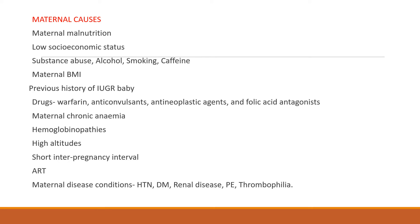IUGR has a wide spectrum of causes. Maternal causes include malnutrition, low social status, substance abuse, alcohol, smoking, caffeine intake, low maternal BMI, previous history of IUGR baby, use of drugs like warfarin and anticonvulsants, chronic anemia, hemoglobinopathies, living at high altitudes, shorter interpregnancy interval, assisted reproductive techniques, and maternal diseases like hypertension, diabetes, renal disease, preeclampsia, and thrombophilia — mainly diseases where there is vasculopathy.